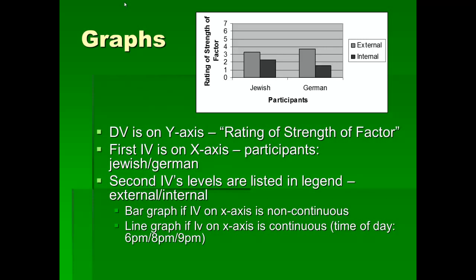The independent variable here is participants, and the levels are Jewish and German. You can also put two independent variables in one graph if the experiment has two IVs — and this one does. The levels of the second IV are listed in the legend, which is the little box that works as a key for the graph. We look in the legend and see one level is external, the other is internal — we're talking about attributions here.